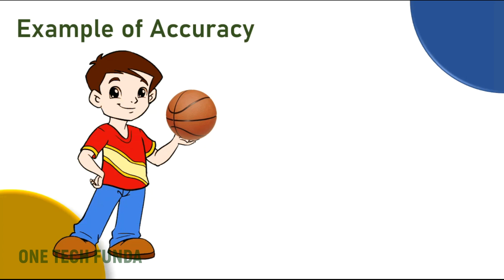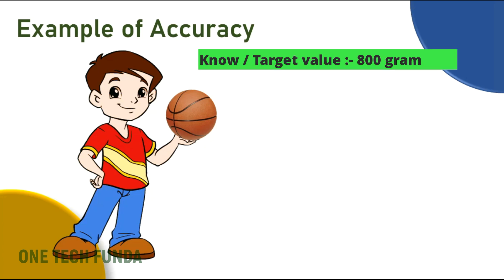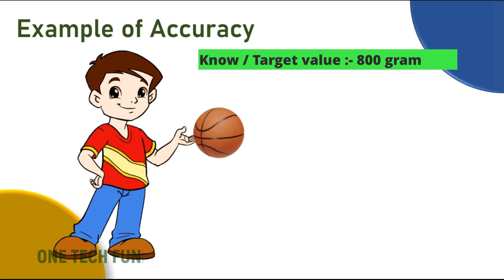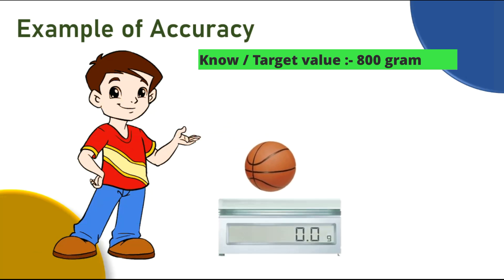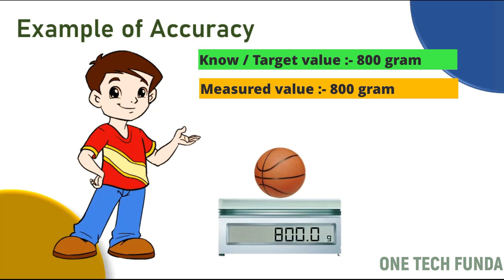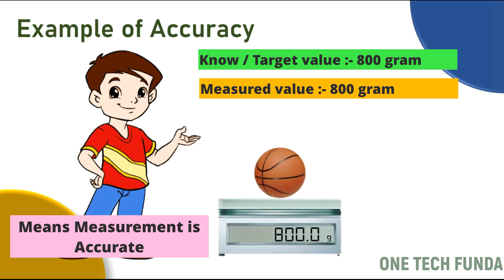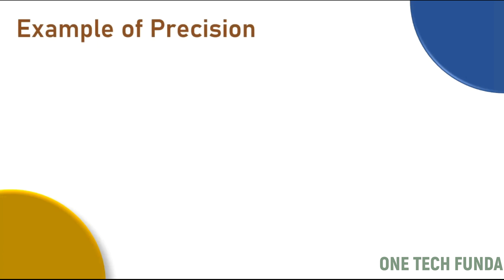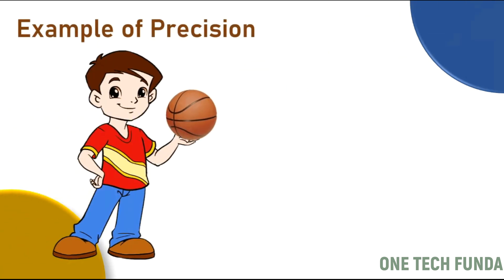Now let's see an example of accuracy. A boy has a basketball and he knows its weight is 800 grams — that is the known or target value. When the weight of the basketball is checked on a weighing machine, it shows 800 grams, which means the measurement is accurate.